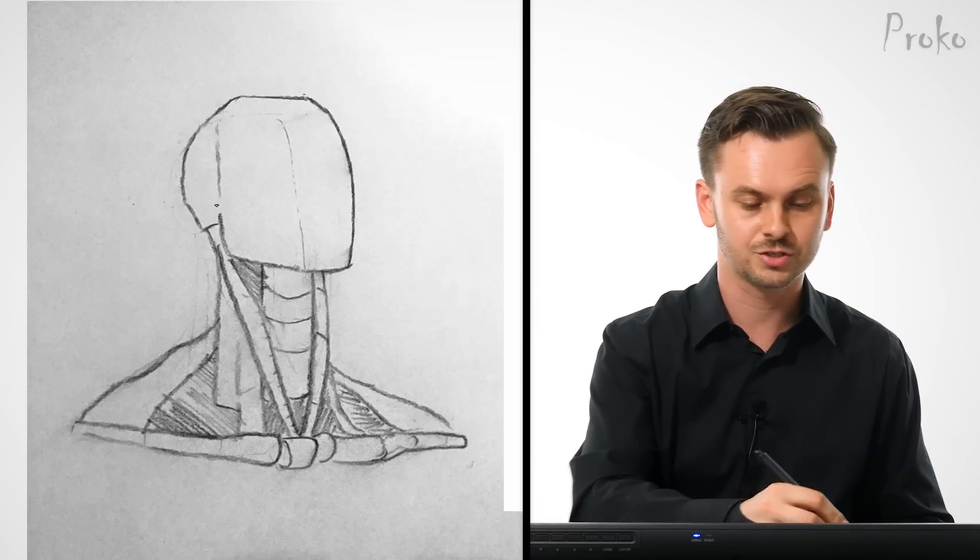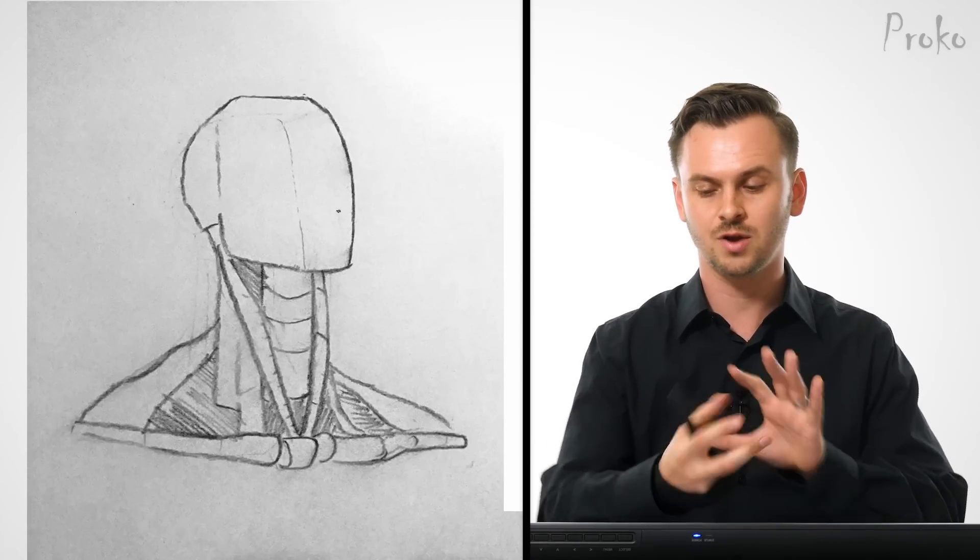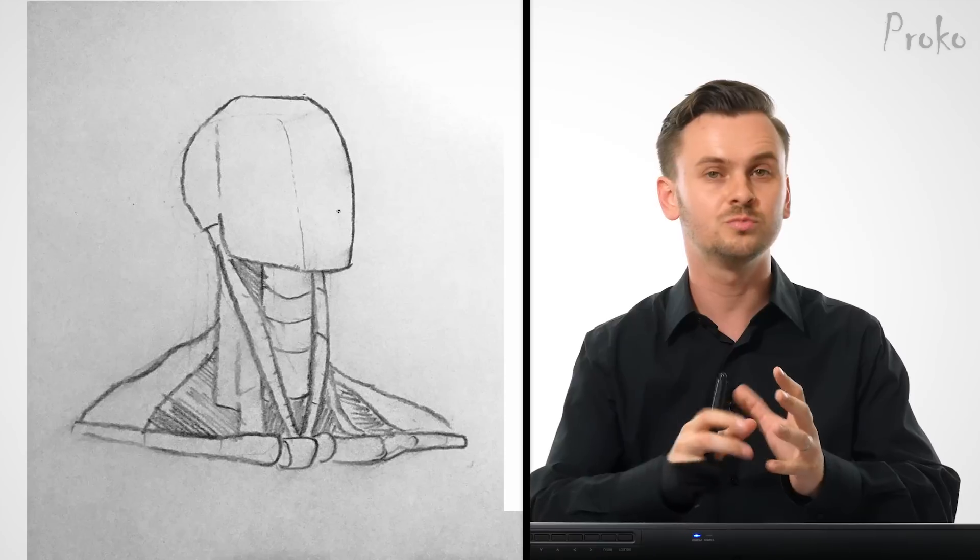So maybe you need to do just a little bit more basic studying of like Loomis head, studying the RoboBean of the body, that sort of thing. Thinking about real complex areas like the neck right now might be a little bit too early, because you're still having a hard time drawing a cylinder with a jaw attached to it.